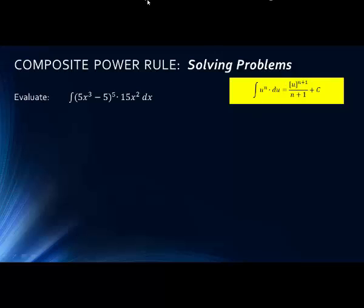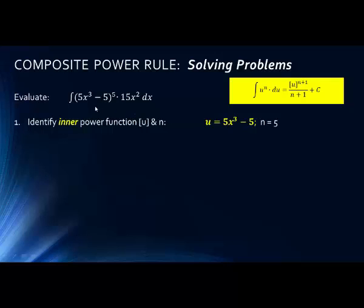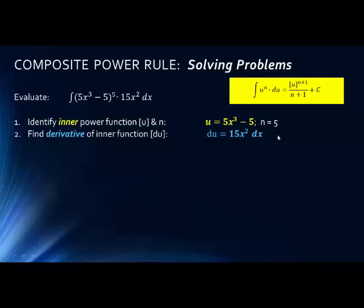Let's try some examples. The first thing we want to do is identify the power function, or u. We can see here that we're raising something to a power of 5, so this is our u — our substitution. So u equals the inner function: 5x³ minus 5, raised to the power of 5. Then we want to find the derivative of the inner function. The derivative of u is 15x² dx. This is du/dx multiplied by dx, which is more notational — one of those bits of calculus where du/dx actually works as a fraction.